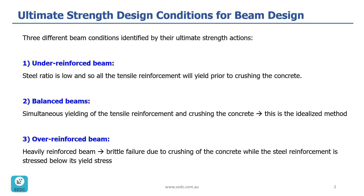The third condition, which is over-reinforced beams, is related to heavily reinforced sections. Over-reinforced beams will have brittle failures since concrete, as a brittle material, crushes while the reinforcement is still in its elastic stress range. These types of beams give no warning of failure, which is sudden and catastrophic.